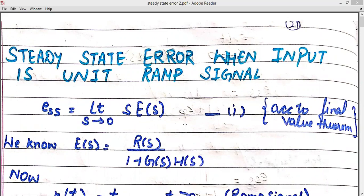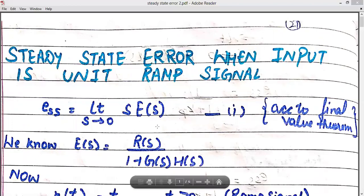Here we are using the steady state error when the input is the unit ramp signal. As we have taken in the unit step signal, E(SS) is the steady state error. According to the final value theorem, we represent the steady state error as ESS equals to limit S tends to 0, S into E(S), where E(S) is our error signal. We know the value of the error signal which is R(S) upon 1 plus G(S) into H(S). This is the way to represent the error signal.